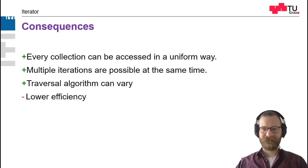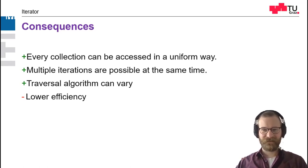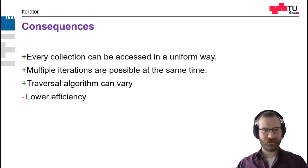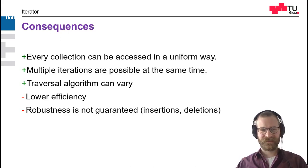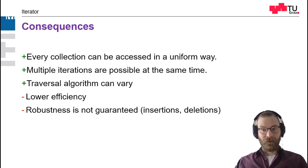One problem is that we have lower efficiency. Think of pointer arithmetic on arrays — this is just an addition, which is very fast. By using iterators, we have to create more objects, we have to store where we are now, and there are some method calls in between. So the efficiency is lower than just using pointer arithmetic. But we gain flexibility and a uniform way to access. Also, robustness is not guaranteed. Think of deleting an item in a list — what is the next item then? Does the whole list get shorter? What about off-by-one errors? What if we insert an element?